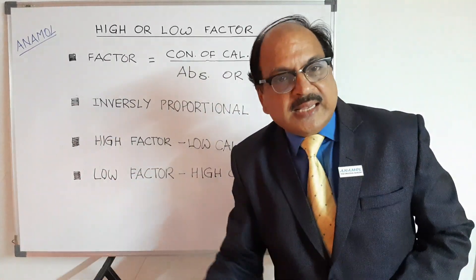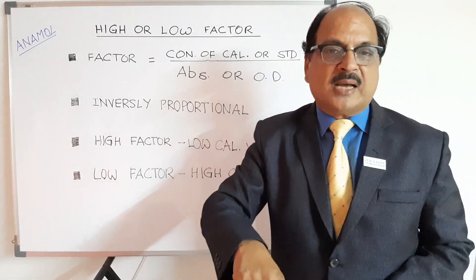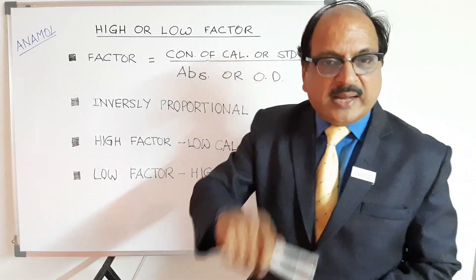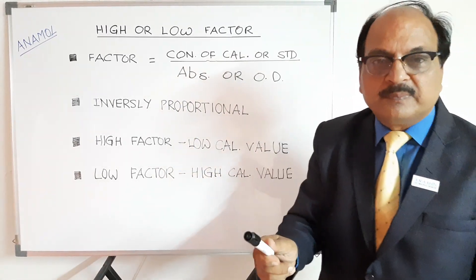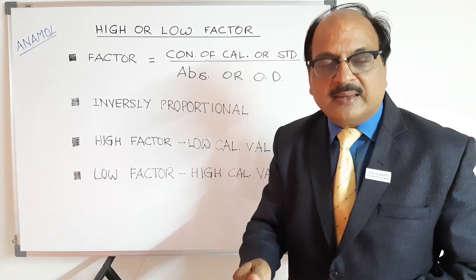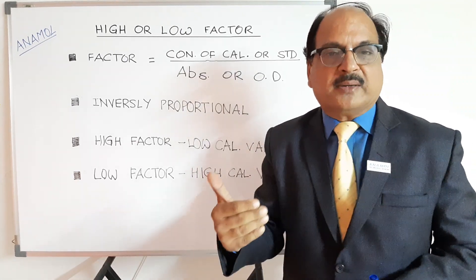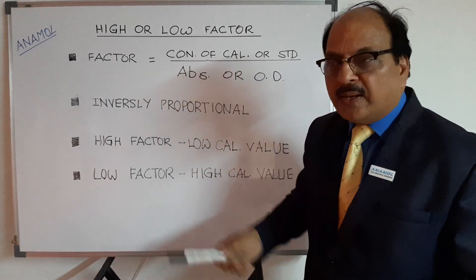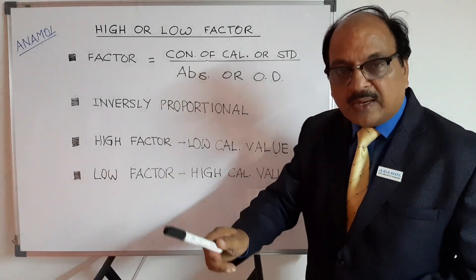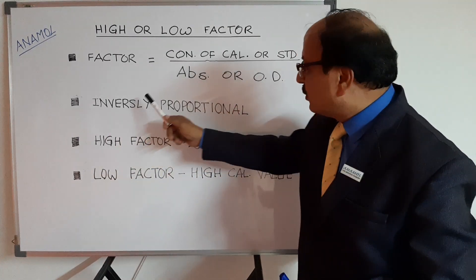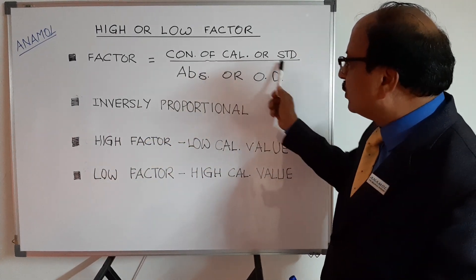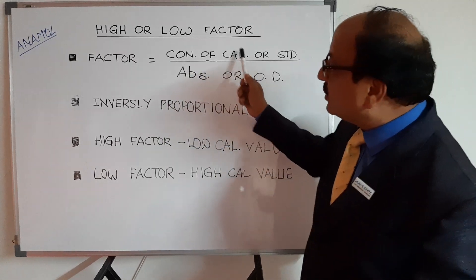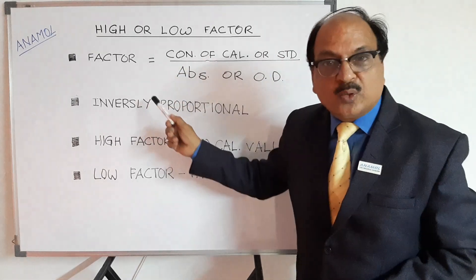For any chance, if the factor is low or the factor is high, your results will be low or high respectively. So ensure your factor is right. How do you ensure the factor is right? You always keep a record of your factor. Your results are inversely proportional to the absorbance which you get, or inversely proportional to the concentration of the standard or calibrator which you have.